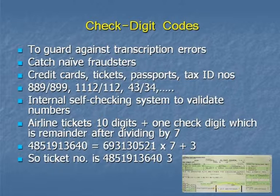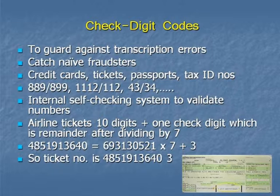Here's a simple worked example to begin with. This is an old-fashioned airline ticket — very hard to come by — and I suspect if you show it to people, Ryanair would charge you an extra 50 quid or something. Here's the ticket number: 485-191-3640, and there's a check digit system in operation. There's another little digit just beyond it, which is a 3. If you divide that ticket number by 7, it doesn't go exactly — you end up with a remainder of 3. So the check digit is the remainder after you divide the ticket number by 7, which is why the 3 appears there.